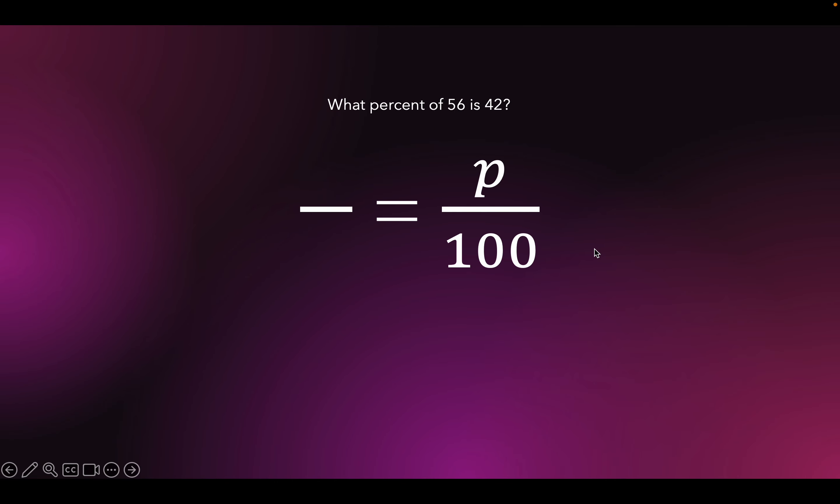Here I have P over 100, and that equals the ratio over here. Now 56 represents the whole amount, right? Just like 100 is the whole amount. So what percent of 56 - I'm talking about this is the whole amount. Remember that a denominator in the bottom of a fraction is always the whole amount.